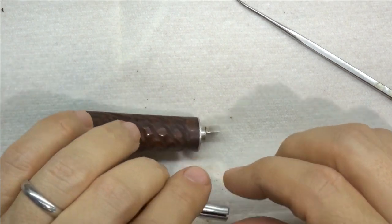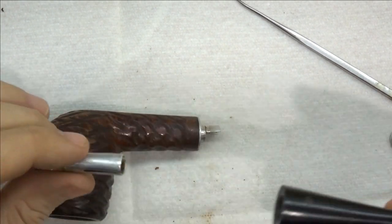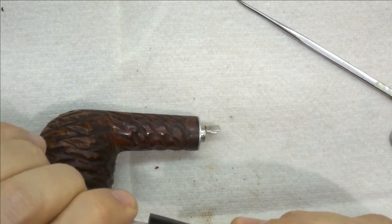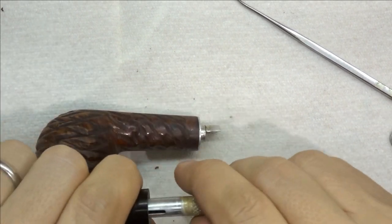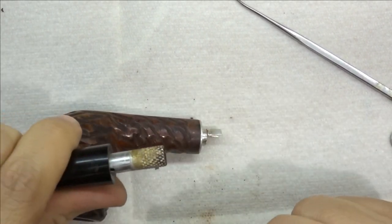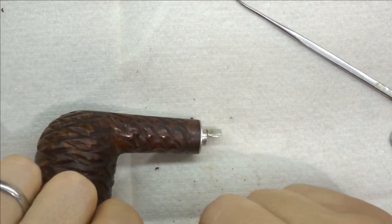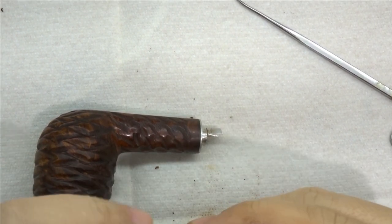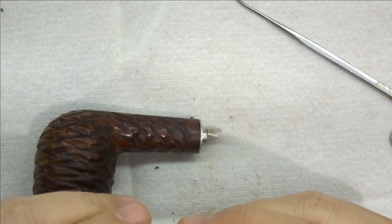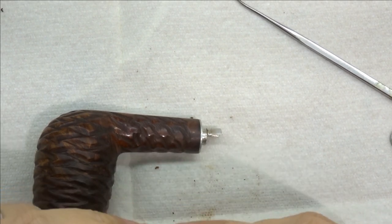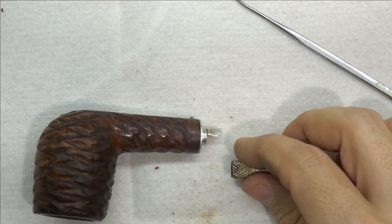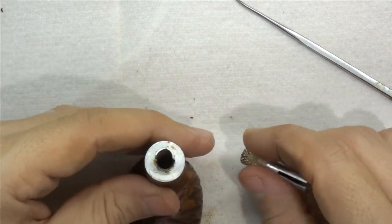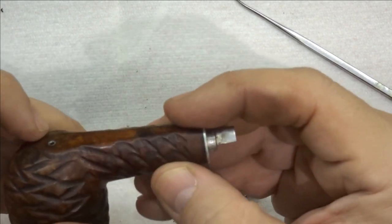We've got one other slight issue, which is that this is a bit longer than the original. So I've got the original stem here and this goes in about that, but that's okay. We can trim this off. We can put it on the lathe and just trim it. We can grab it here in the chuck. So we'll trim that down a bit, but this will work, this will almost certainly work.